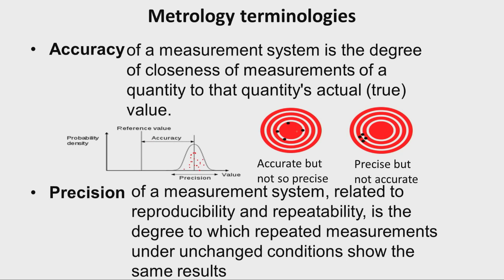If the mean value coincides with the reference value, then we say the measurement system is very accurate. In another diagram, the center point represents the target or desired value and measurement points are scattered around it. When we calculate the average of these measured points, it will be very close to the target value, so we say the process is very accurate.